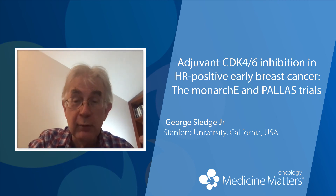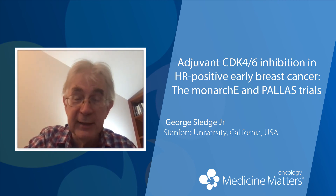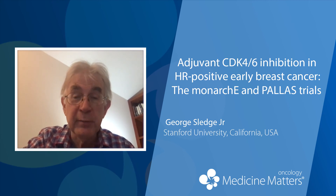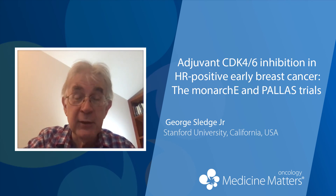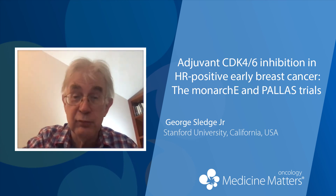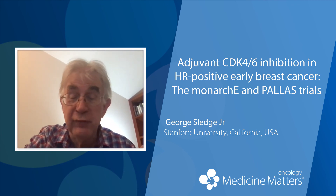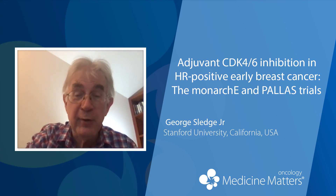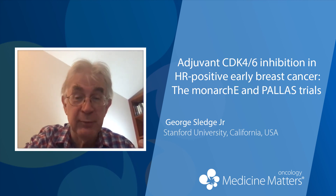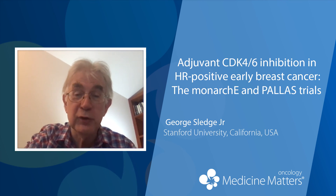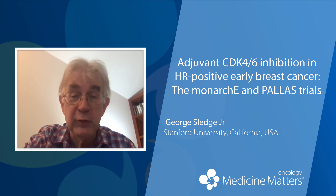The ribociclib adjuvant trial, run by the TRIO organization and called the NATALI trial, is still accruing patients. It was close to its accrual goal, but based on what went on with PALUS and MONARCH-E, the trial has been amended to include a higher-risk population. They'll be accruing more patients with four or more positive lymph nodes, in hopes that this explains the difference in the trials and allows the trial to have more events and perhaps see a better separation of the curves.